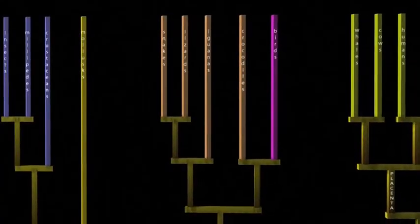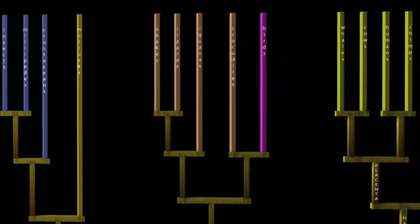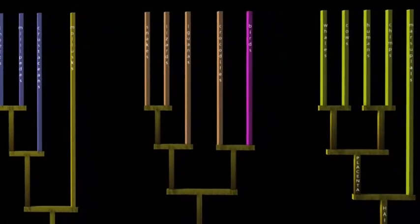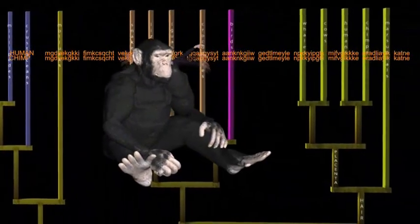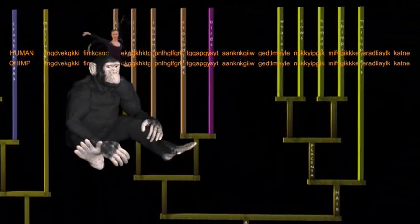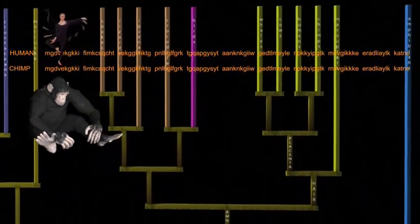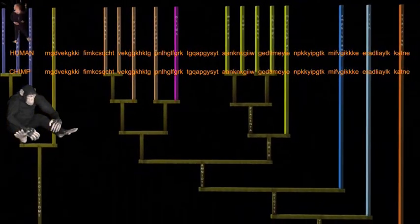But these mutations do tell the genealogy of the owners. For example, humans and chimps have exactly the same amino acid sequence for this protein. It hasn't mutated in the 6 or 7 million years since our lines separated.